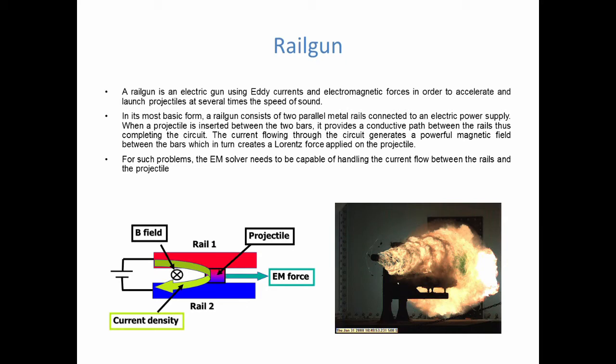So how do railguns work? Take a look at the sketch on the left. In its most basic form, a railgun consists of two parallel metal rails connected to an electric power supply. When a projectile is inserted between the two bars, it provides a conductive path between the rails and this way you complete the circuit. The current flowing through the circuit generates a powerful magnetic field between the bars, which in turn creates a Lorentz force applied on the projectile, propelling it out at supersonic speeds.